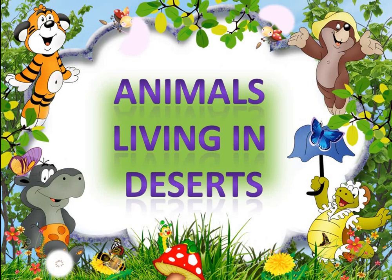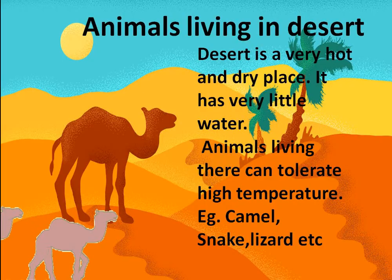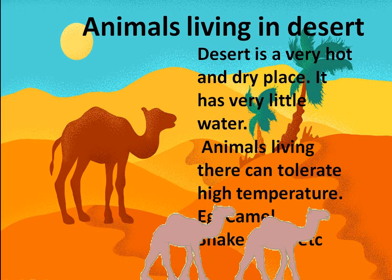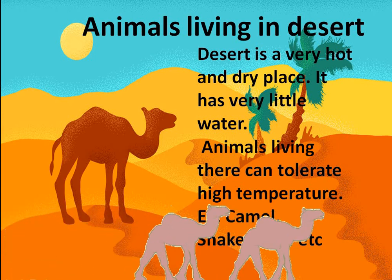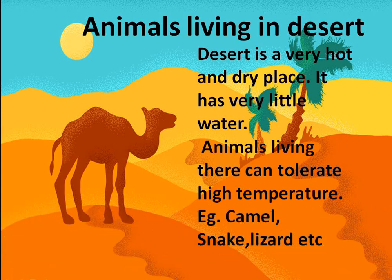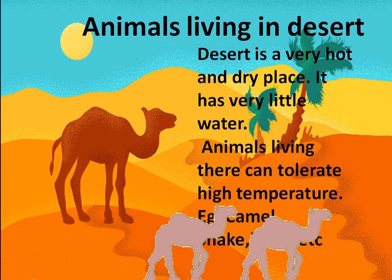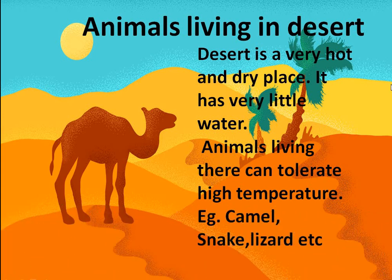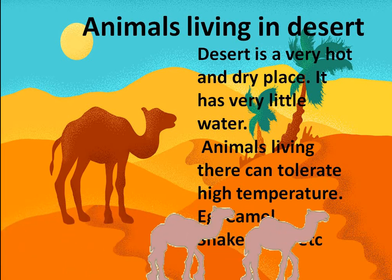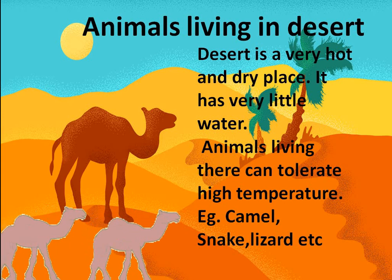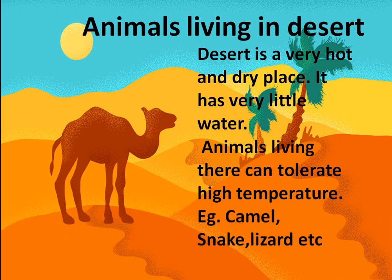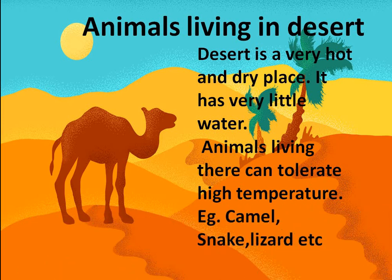Now we will be doing animals living in deserts. First of all, what is a desert? A desert is a very hot and dry place with very little water. Animals which live there can tolerate high temperatures. Examples are camel, snake, lizard, etc.